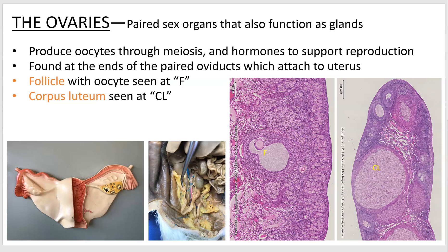Welcome to episode 5 of Biology 2402 lab, starting the ovaries. They do a lot besides just act as glands, so I've called them sex organs that function as glands. You can call them a gland, you can call them a sex organ, whatever - I don't care about the semantics.